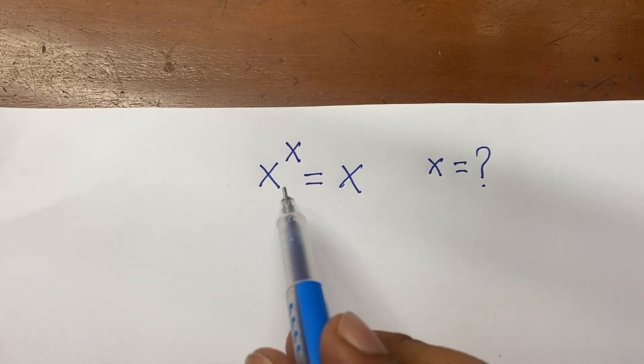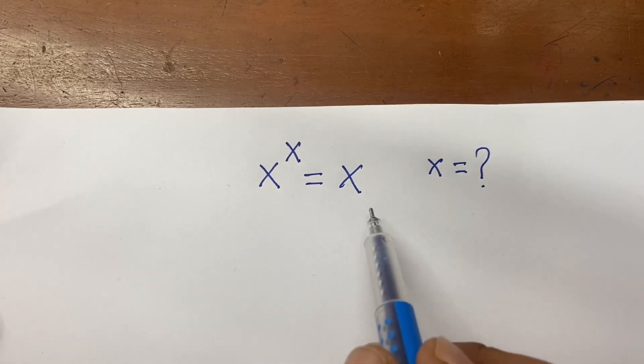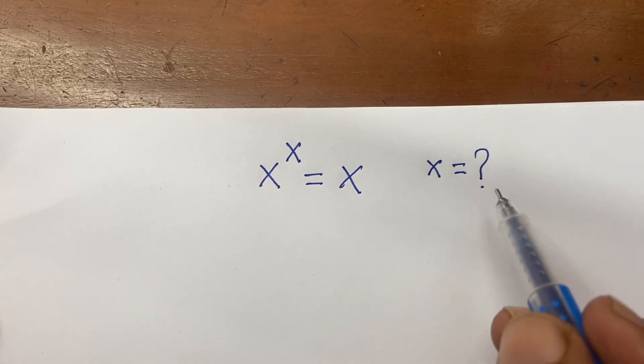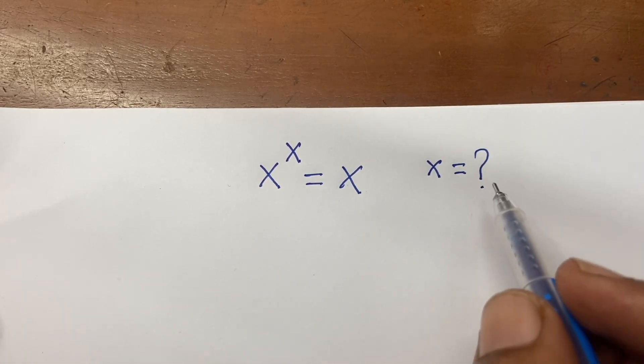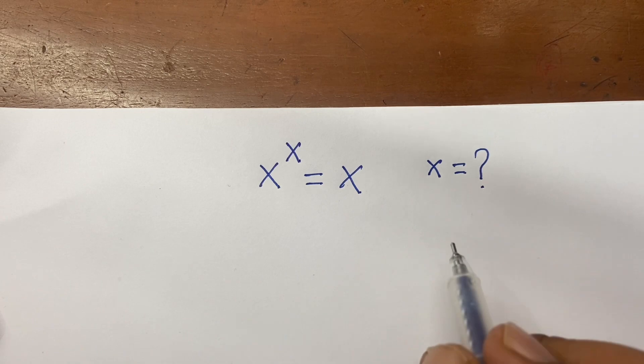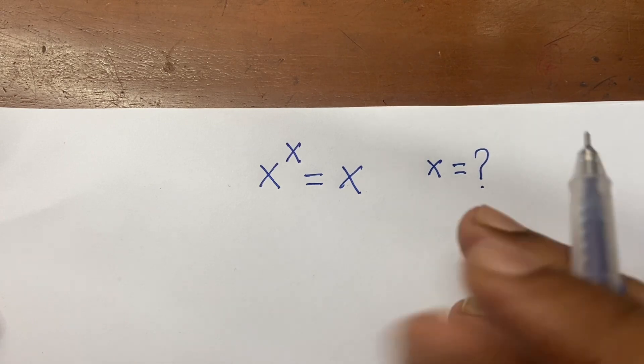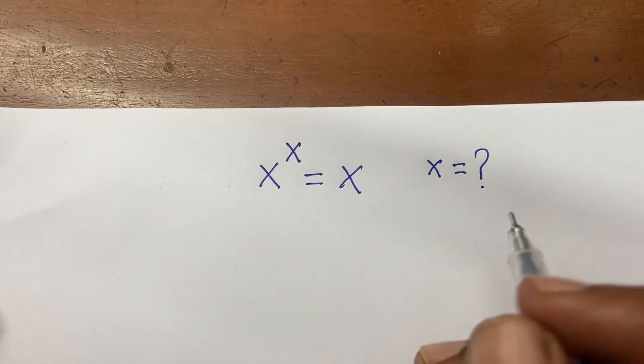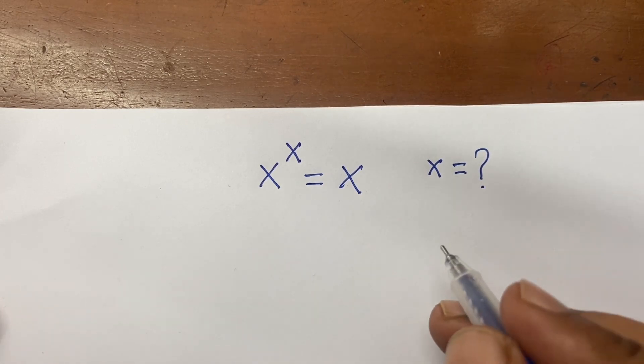Hello everyone. This question is x to the power x equal to x. I find out what is the value of x. It is a math Olympiad question, and I will solve this question using three methods.